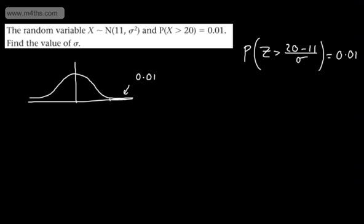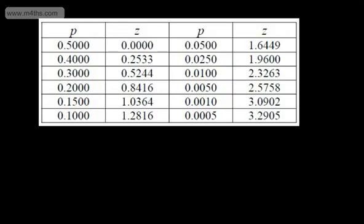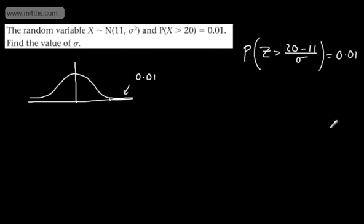So let's go to that and find 0.01. So where are we? Here we are. We want this one, don't we? So 0.01. So what we've got then is 2.3263, so 2.3263. So let's put this here, 2.3263.